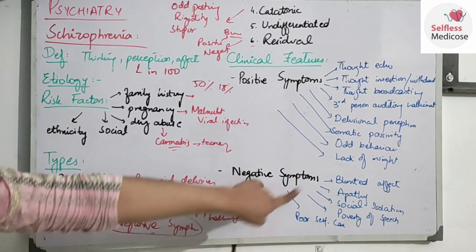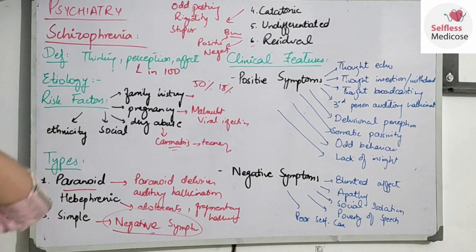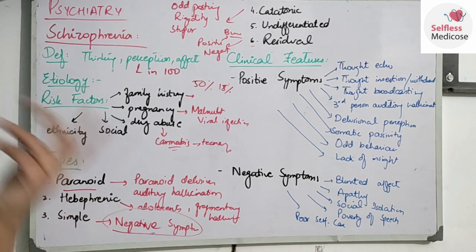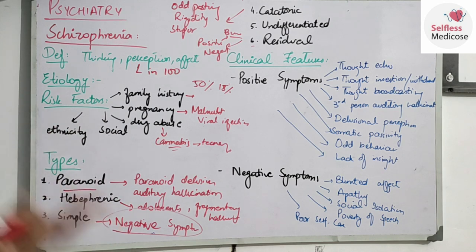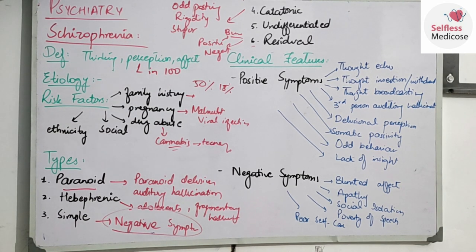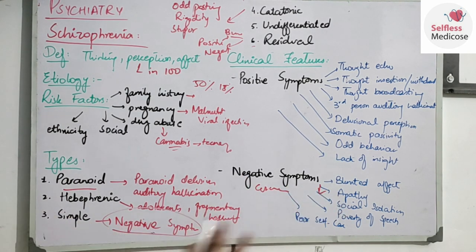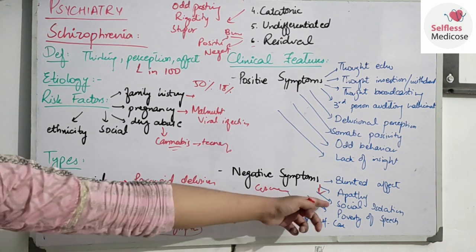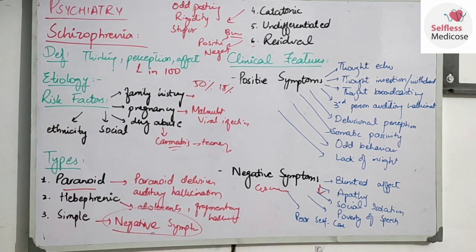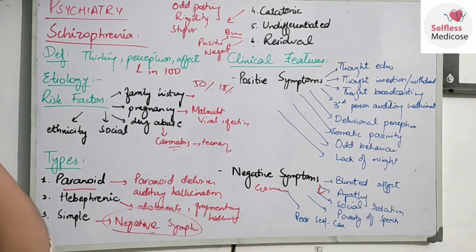Negative symptoms include blunted affect — the mood and emotional expression are very flat. Apathy means the patient loses interest in daily activities, joy, and concentration. Recreational activities and interest are all gone. Social isolation is present and poverty of speech — people talk very little and don't want to talk for long. Poor self-care is also present. These are the symptoms; now we will do the management and complications.